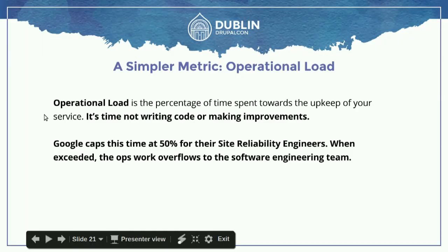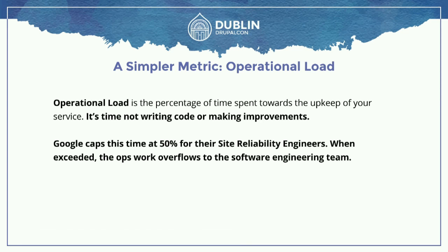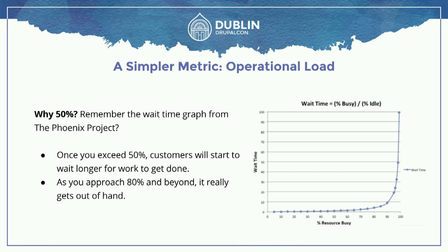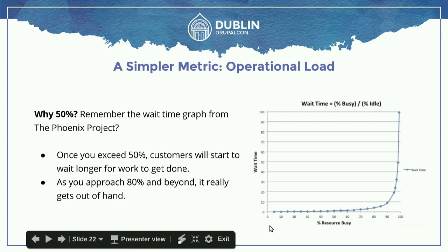You have these four types of work, which can be kind of complicated to track. So let's do something simple — operational load. Operational load is simply the percentage of time spent towards the upkeep of your service, as in time not writing code or making improvements. Google kept their operational load time at 50% for their SREs. When exceeded, this work actually overflows to the software engineering team. Why 50%? There's a wait time graph from The Phoenix Project that's very interesting. I thought 50% was a very cool value.